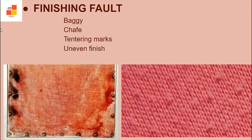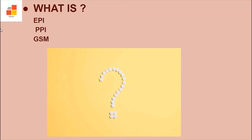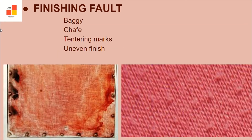Next, uneven finish means when the finish is not uniform from one location to another. For example, uneven glazing which adds uneven luster and smoothness on the fabric.